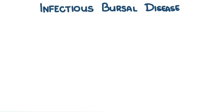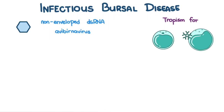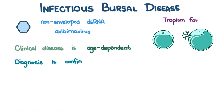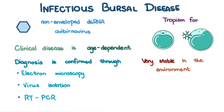To recap, Infectious Bursal disease, or Gumboro disease, is caused by the Infectious Bursal disease virus, a non-enveloped, double-stranded RNA avibernavirus of the family Birnaviridae. It has a tropism for B lymphocytes at a specific stage of maturation in the Bursa of Fabricius. Clinical disease is age-dependent. Necropsy is commonly done in the field, but diagnosis can be confirmed through electron microscopy, virus isolation, and RT-PCR. The Infectious Bursal disease virus is very stable in the environment and is best prevented through vaccination.